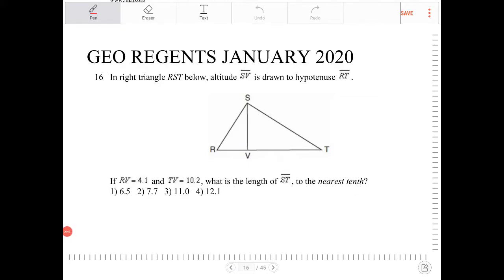In right triangle RST below, altitude SV is drawn to hypotenuse RT. If RV is equal to 4.1 and TV equaling 10.2, what is the length of ST to the nearest tenth?